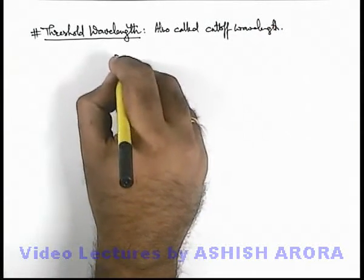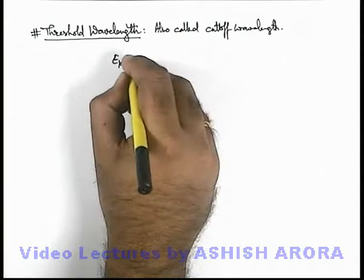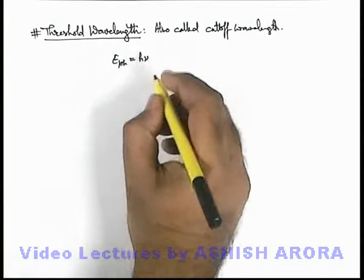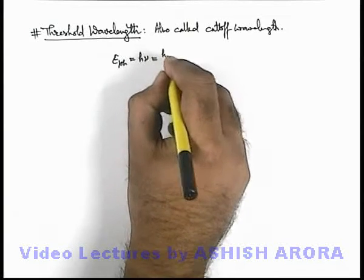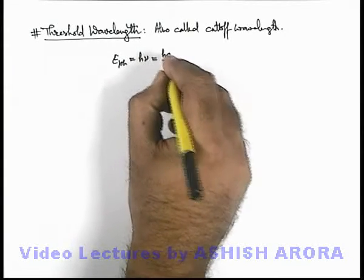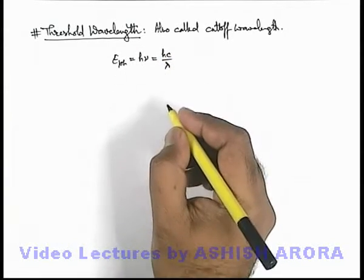If we define the energy of a photon for a light, we define it as h nu, where nu is the frequency of radiation. The same can be written as h c by lambda, where lambda is the wavelength of the incident radiation.